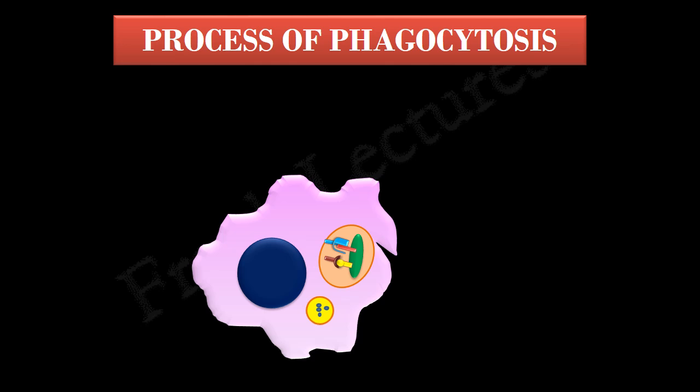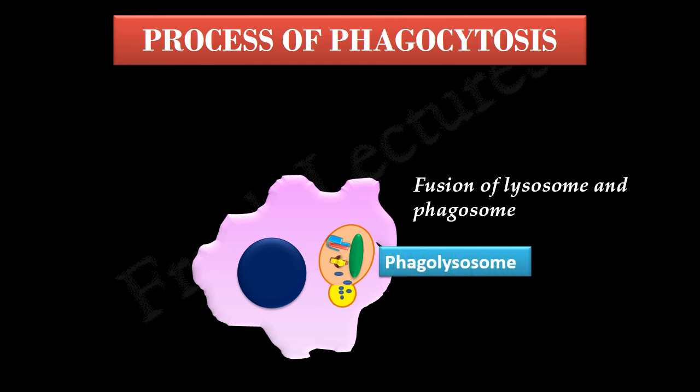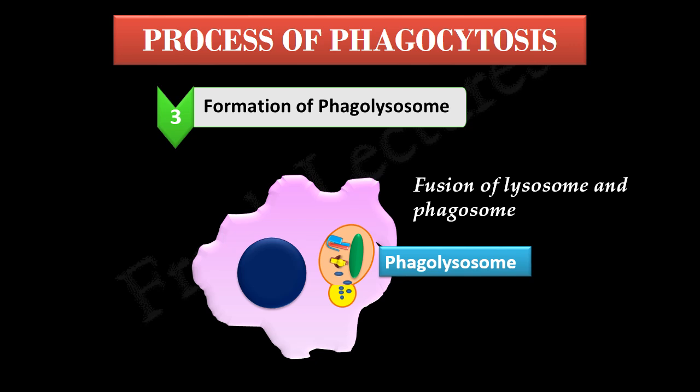This phagosome fuses with one or more lysosomes inside the cytoplasm of the phagocyte. Lysosomes contain digestive enzymes and microbicidal substances. This fusion results in the formation of a larger structure known as a phagolysosome — a structure formed by the fusion of the phagosome and lysosomes.